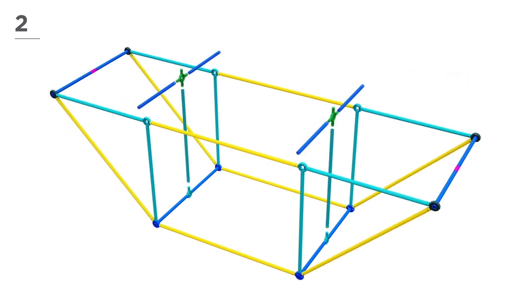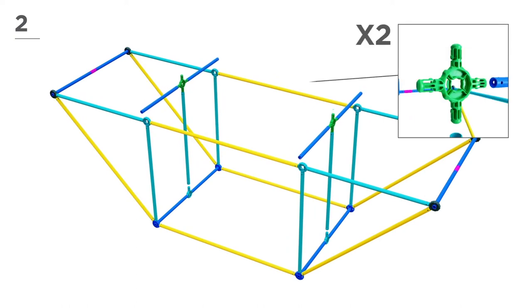Next, add 2 blue poles, 4 navy poles, and 2 green connectors, then snap-and-click the parts together.